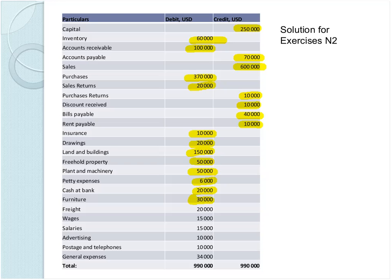Petty expenses — small expenses paid for bills like telephone — we put on the debit side. Cash at bank — a resource — we put on the debit side. Furniture and equipment — company's resources — also on the debit side. Freight — goods sent to customers — seems as inventory, put on the debit side. Wages, salaries, all expenses go on the debit side. Advertising, postage, telephone bills, and general expenses also all go on the debit side.